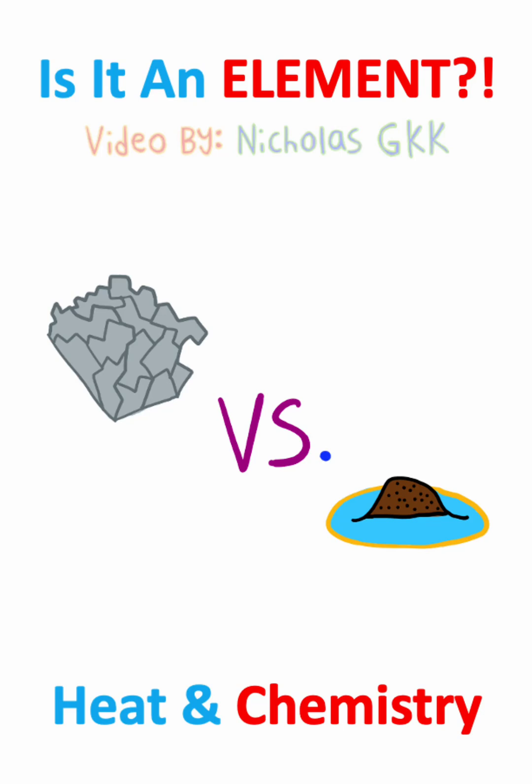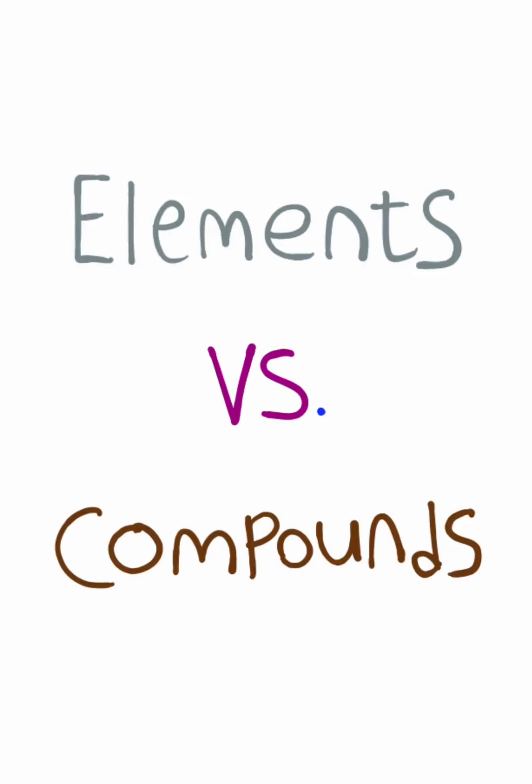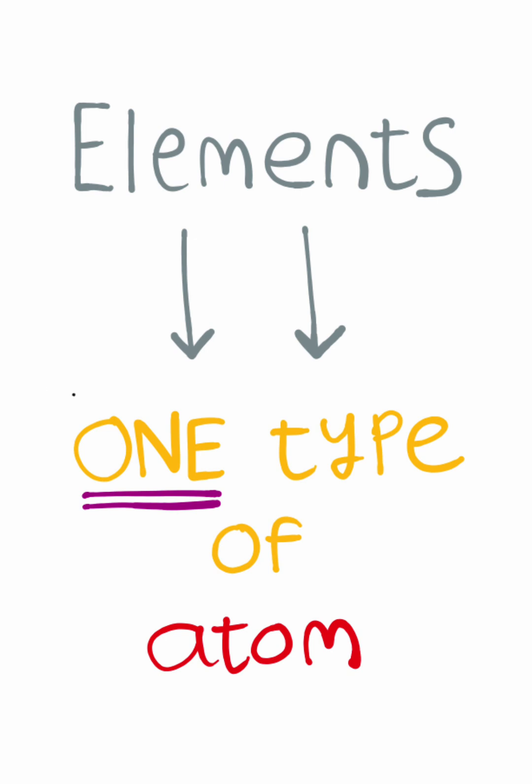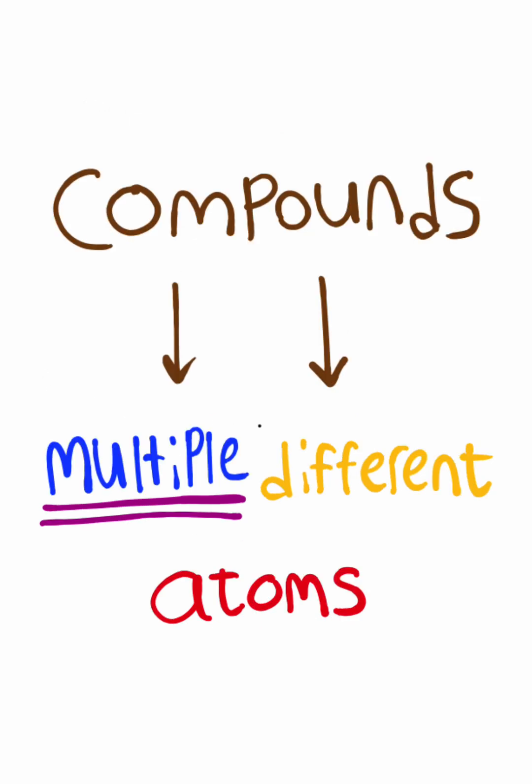In chemistry, you will need to know the difference between elements and compounds. Elements consist of only one type of atom, whereas compounds consist of multiple different atoms.